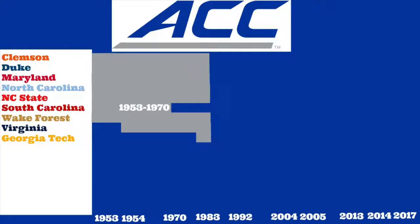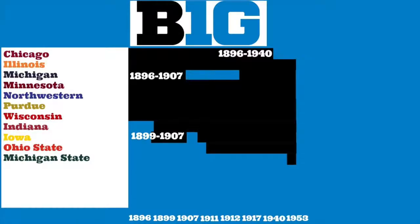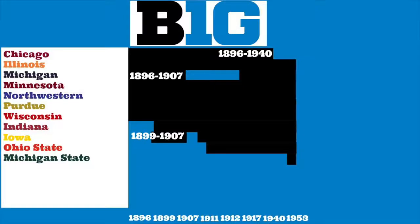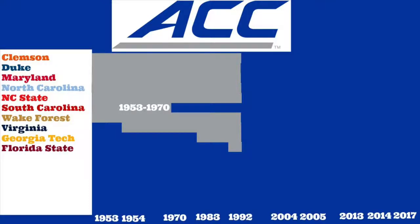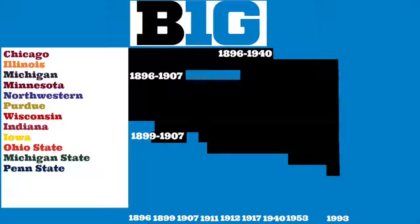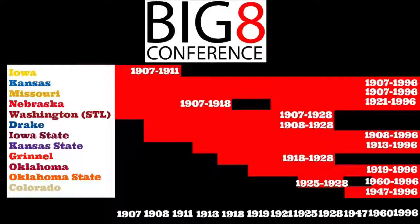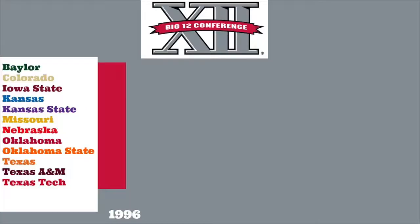In 1983, Georgia Tech joined the ACC in football — they had joined in 1979 in all other sports. In 1987, the Big Ten officially changed their name to the Big Ten — seriously. In 1992, Arkansas left the Southwest to join the SEC. South Carolina joined from independent status, and it was also the very first SEC Conference Championship game — actually the first conference championship game of any type. Also that year, Florida State joined the ACC as their ninth member. In 1993, Penn State joined the Big Ten. In 1996, the Southwest Conference and the Big Eight combined some of their members — Baylor, Texas, Texas Tech, and Texas A&M from the Southwest, plus all eight Big Eight members — to form the Big 12.